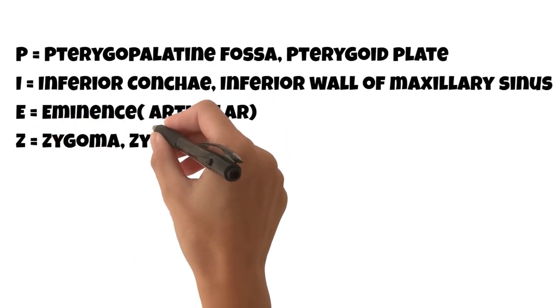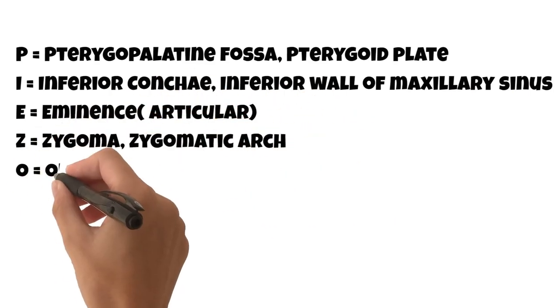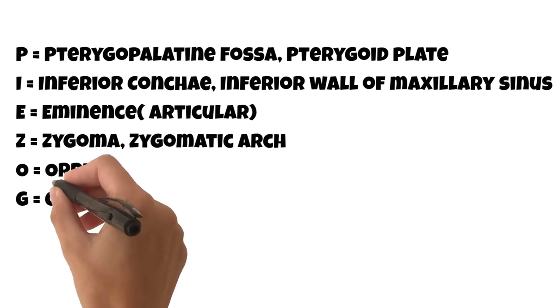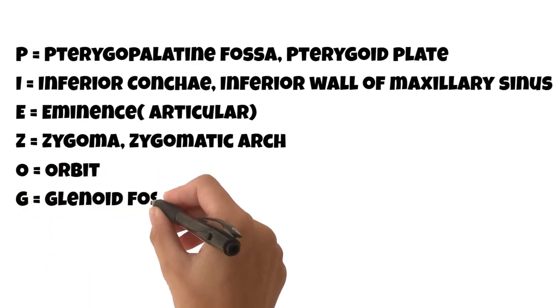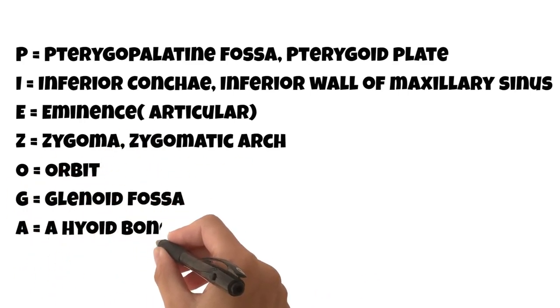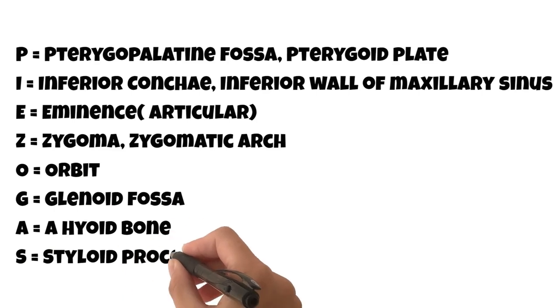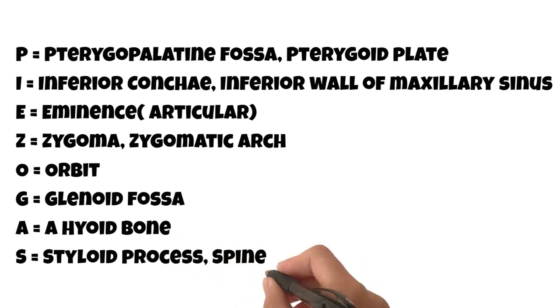Z equals zygoma and zygomatic arch, O equals orbit, G equals glenoid fossa, S equals styloid process, and S equals the cervical spine.